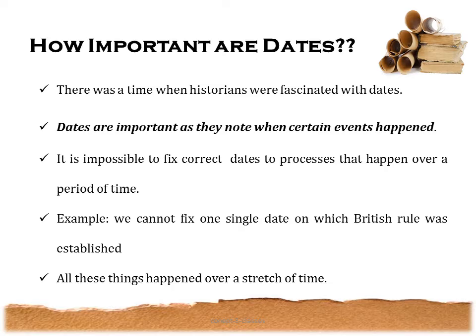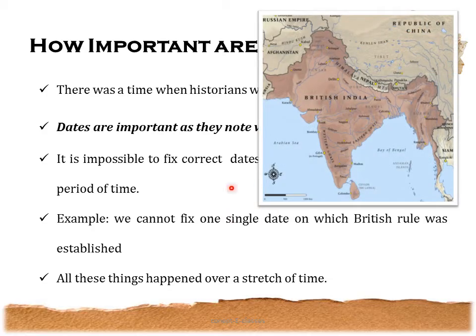The first topic of this chapter is how important dates are. There was a time when historians were fascinated with dates, and there were heated debates about the dates on which rulers were crowned or battles were fought. Dates are important as they note when certain events happened. But in certain cases, it is impossible to fix precise dates to processes that happen over a period of time. For example, we cannot fix one single date on which British rule was established — all these things happened over a stretch of time.